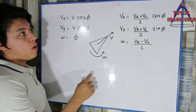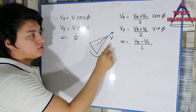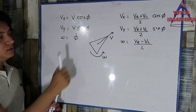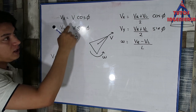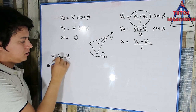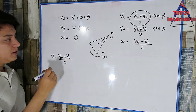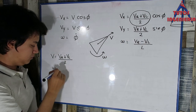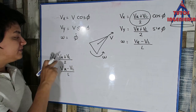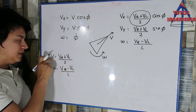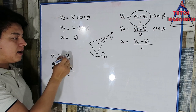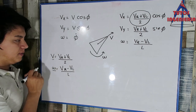Here we are going to derive the wheel velocities as a function of linear velocity V and angular velocity omega. Comparing the two models, we can see that the linear velocity equals V_R plus V_L over 2, and the angular velocity omega equals V_R minus V_L over L. We want to find V_R and V_L in terms of V and omega.